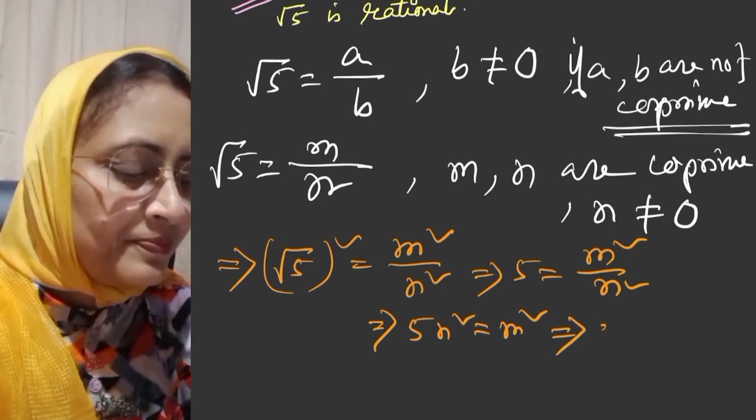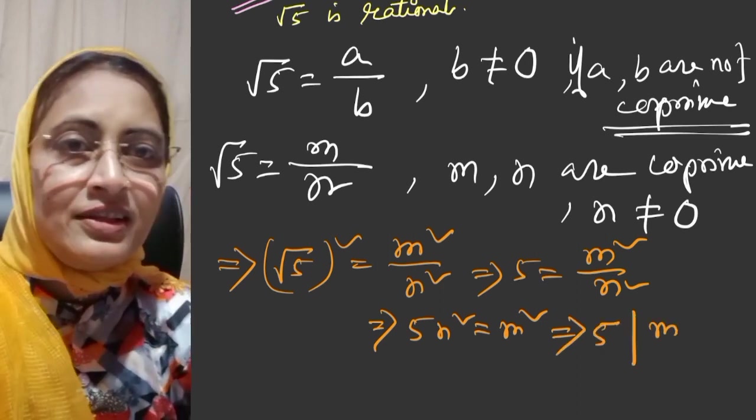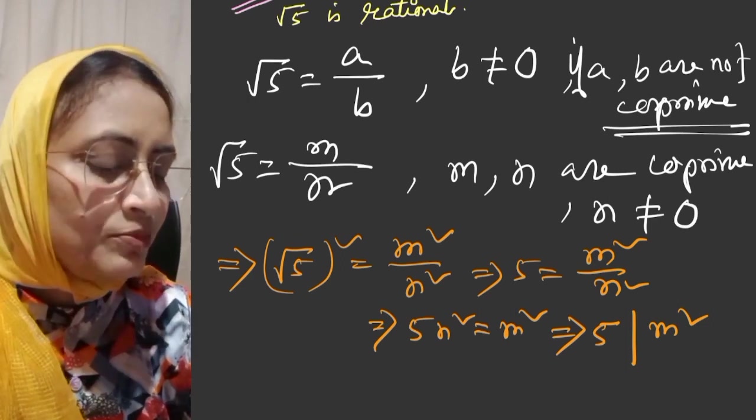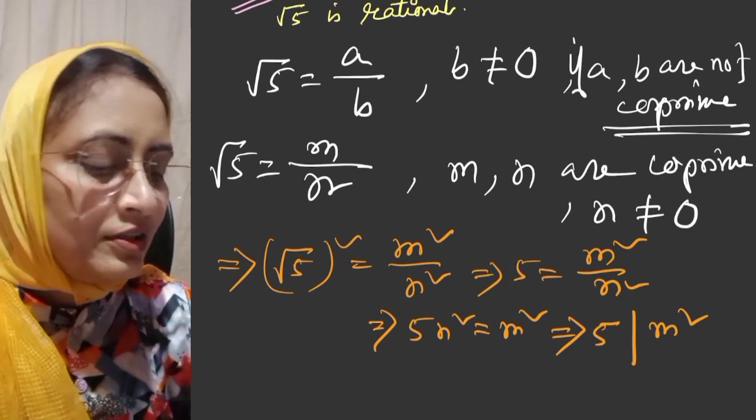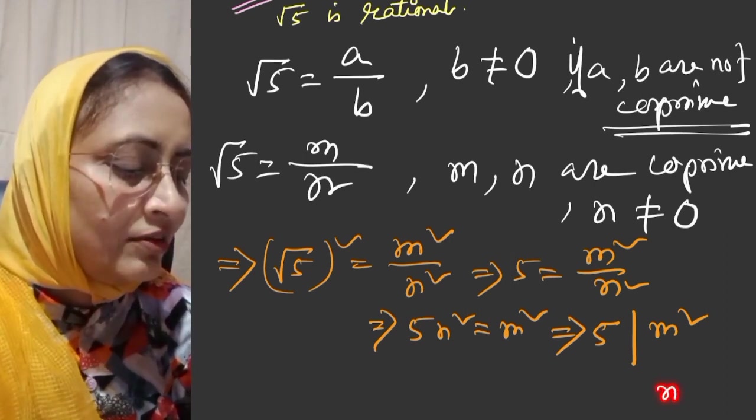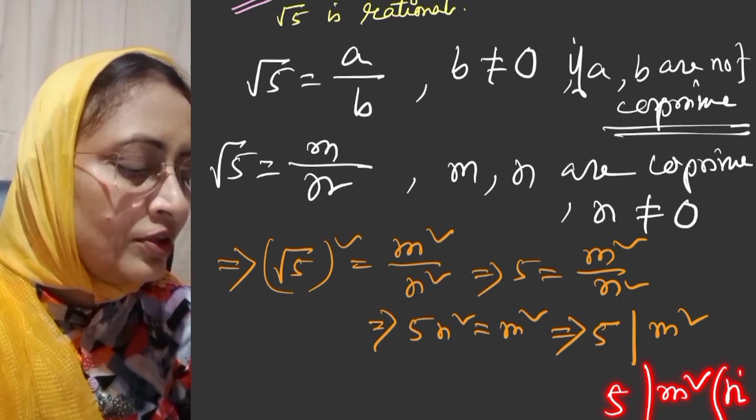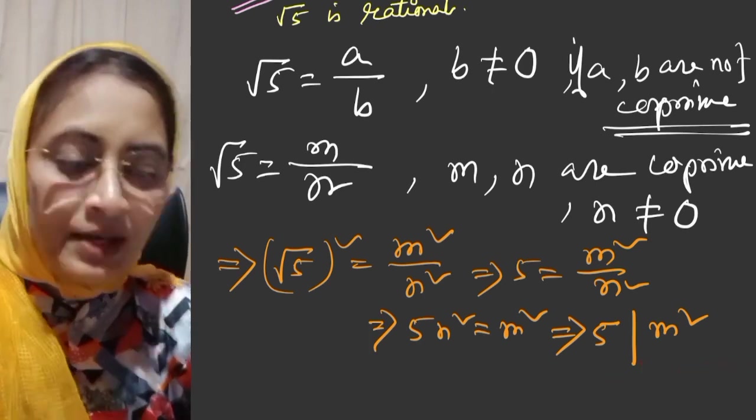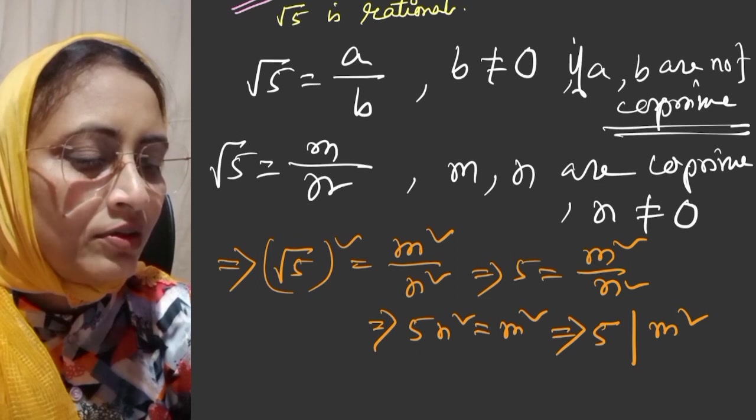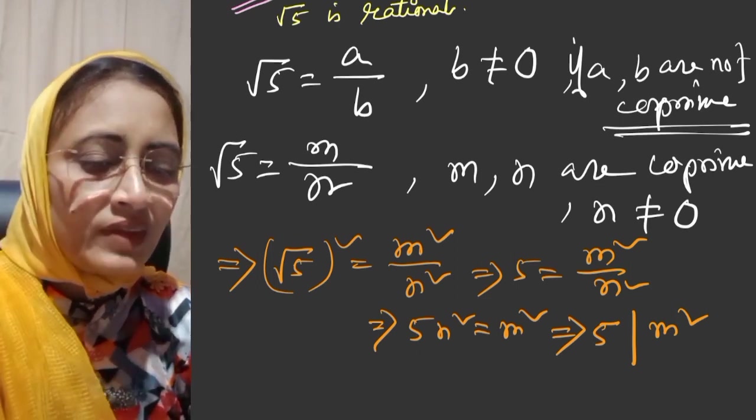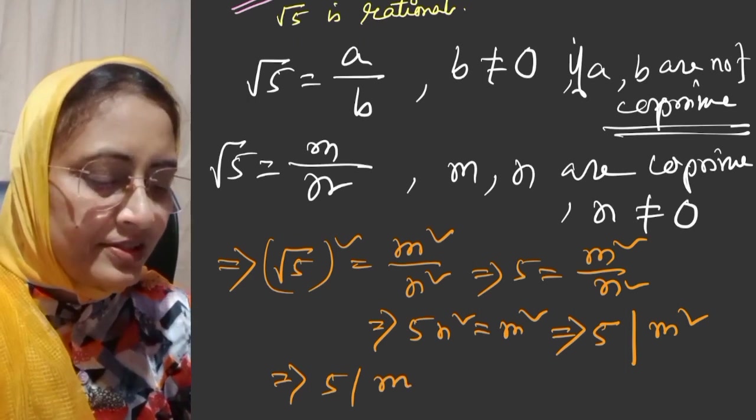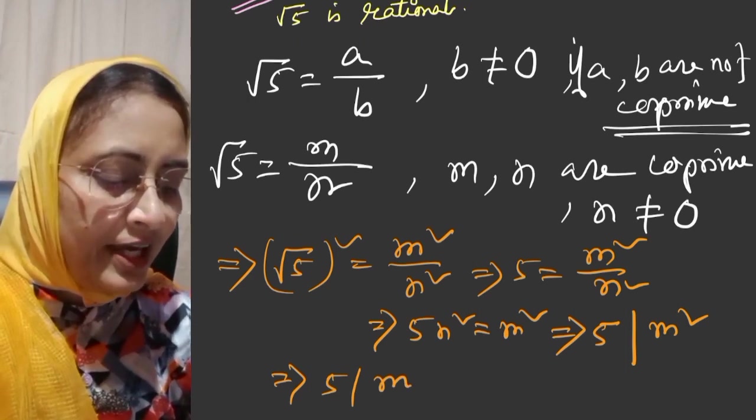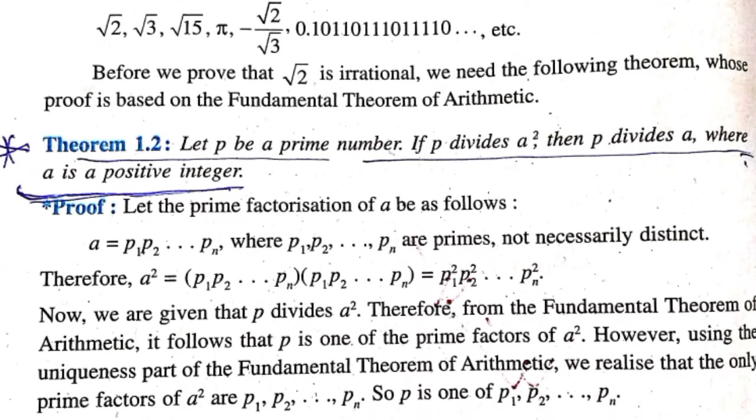From 5n square equals m square, it follows that 5 divides m square. Now there's a theorem: Theorem 1.2 states that if p is a prime number and p divides a square, then p divides a.